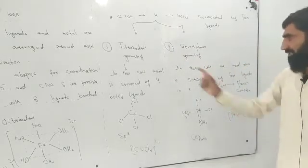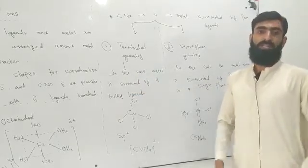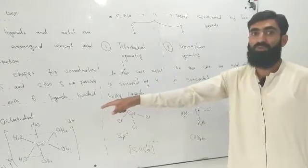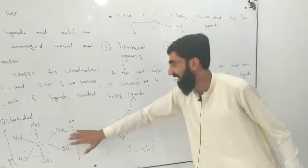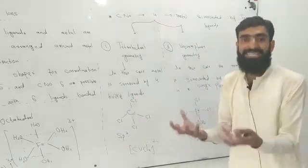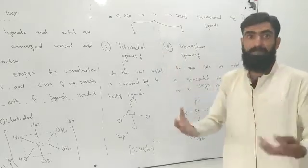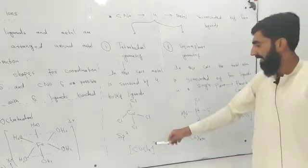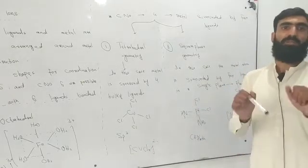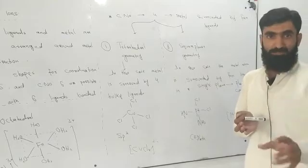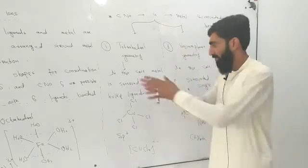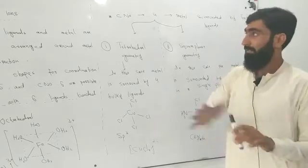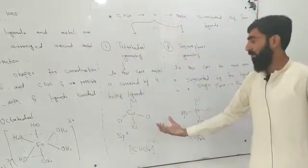In tetrahedral geometry, the metal is surrounded by four bulky ligands. Bulky means large ligands. When ligands are bulky, there are fewer chances for six ligands to attach, so four ligands attach instead. For example, chlorine is a bulky ligand, so the metal cannot accommodate more. The example is CuCl4 — a copper complex in tetrahedral geometry. Its hybridization is sp3, meaning one s orbital and three p orbitals of the central metal atom hybridize to form four orbitals that form coordinate covalent bonds in a tetrahedral geometry.